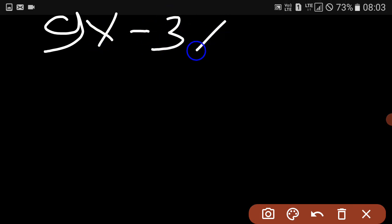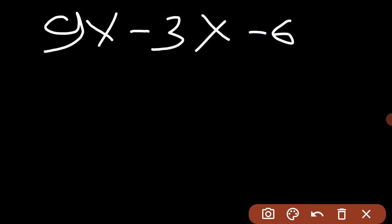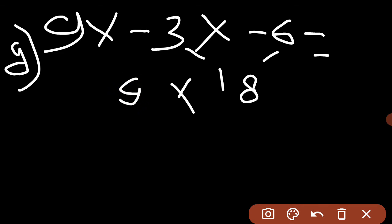Part G says 9 into minus 3 into minus 6. For the simplification, you can do 6 into 3 is 18, 18 into 9 is 162.